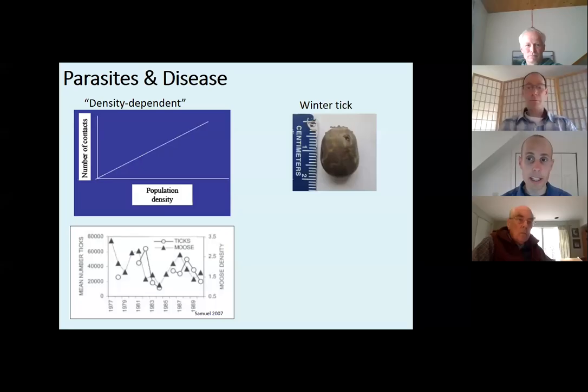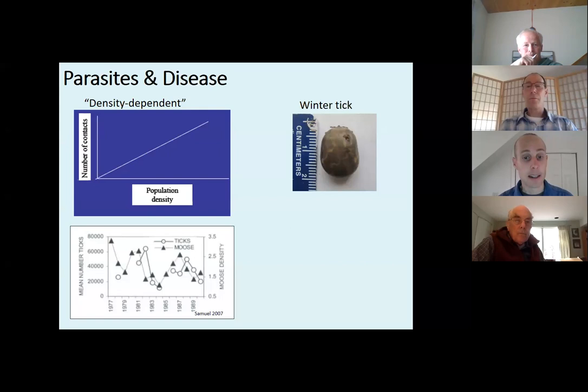The winter tick is a different species of tick than you and I typically get on us. We typically get American dog ticks or black-legged ticks. Winter tick has a different life cycle — we'll get to that. But just in the lower left-hand corner, you can see winter tick generally tracks moose abundance.